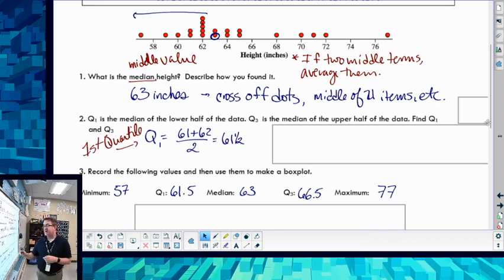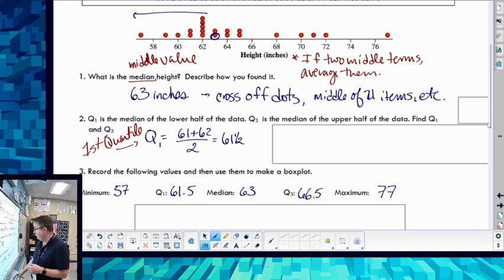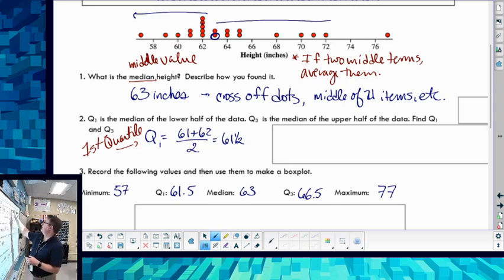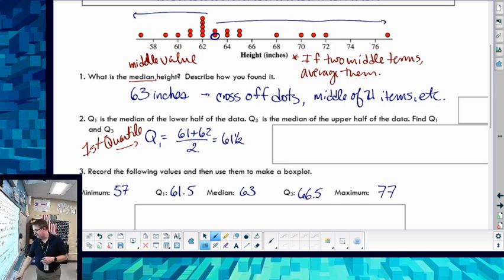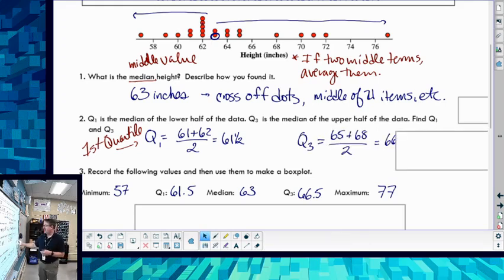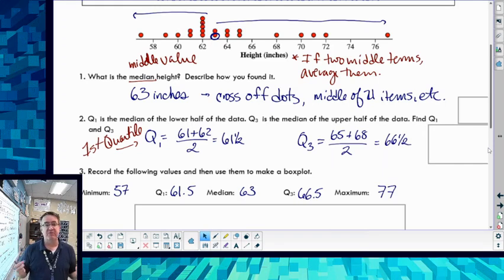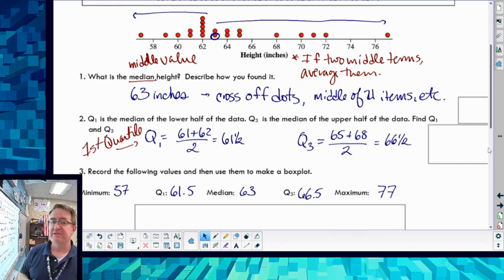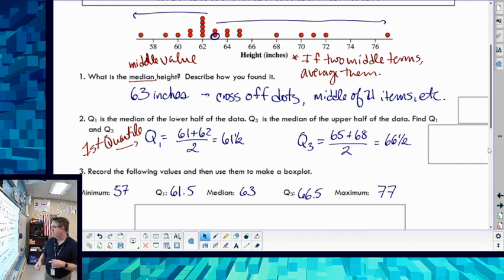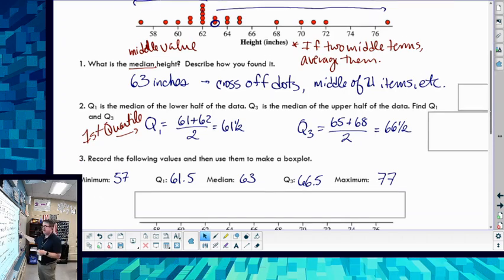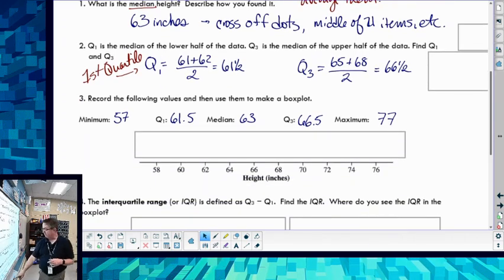The third quartile, you're going to do the same thing. It's going to be from that second 63 all the way up to the 76. And so when you do that, you find two middle terms of 65 and 68. And again, we're going to average those two, so that average is going to be 66 and a half. So that's going to make up what's called our five-number summary. That's our third quartile.